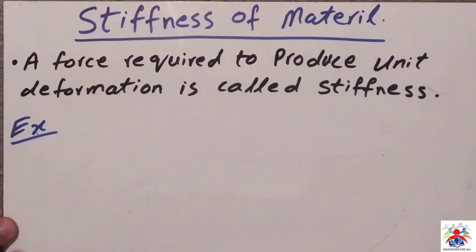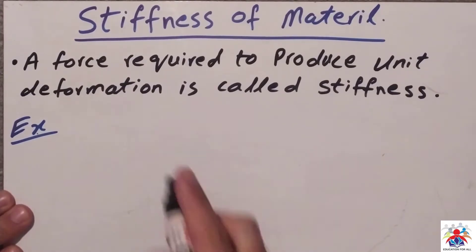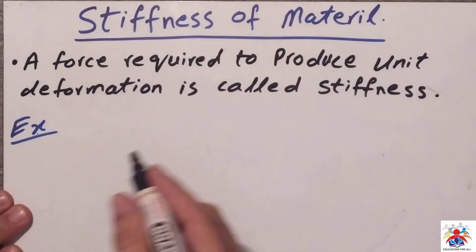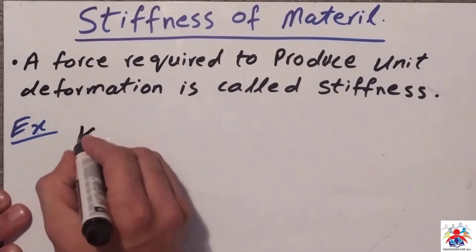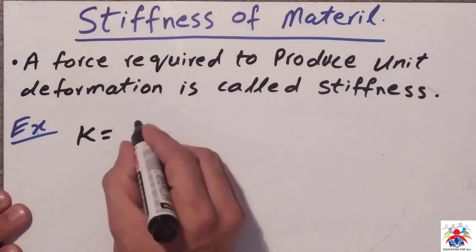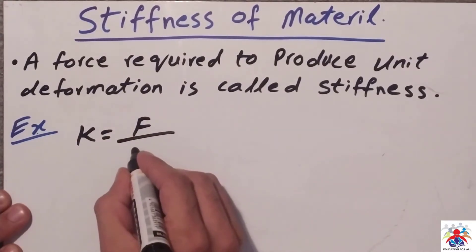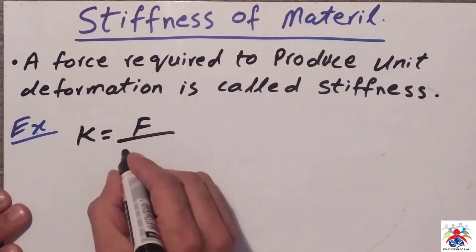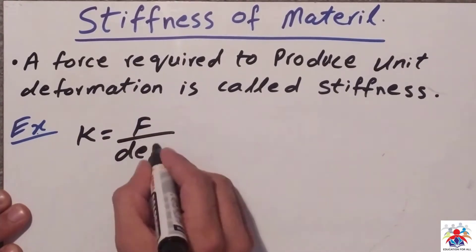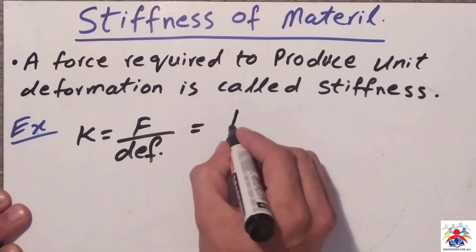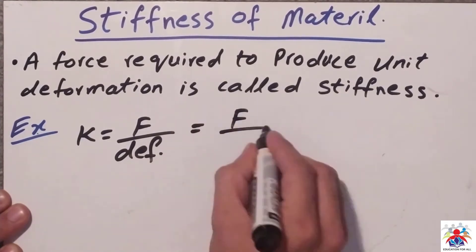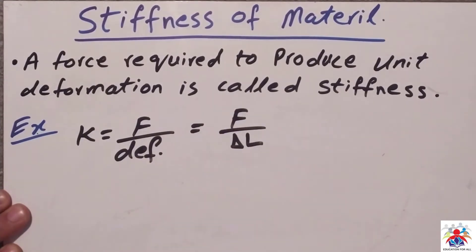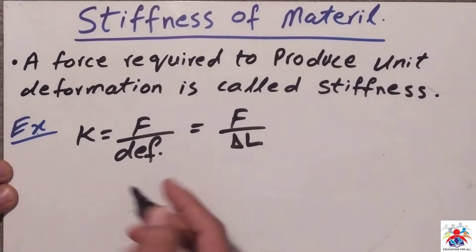In order to explain clearly, I will give you some examples and the formula of stiffness. The formula for stiffness is: k is equal to force divided by deformation — that is, force divided by change in length, since deformation is always change in length.